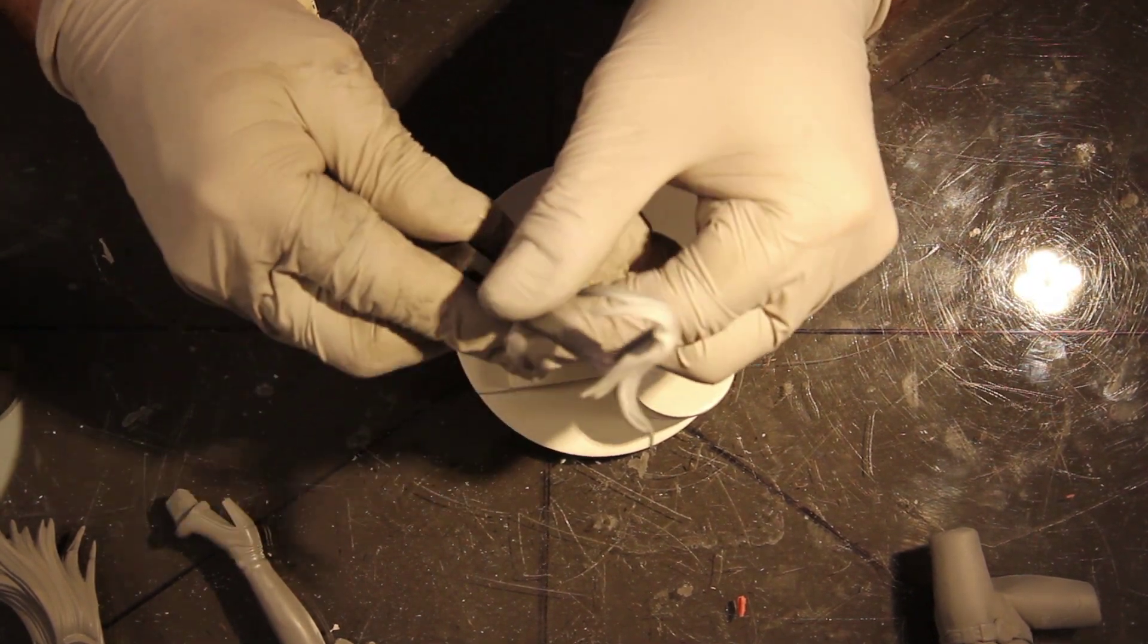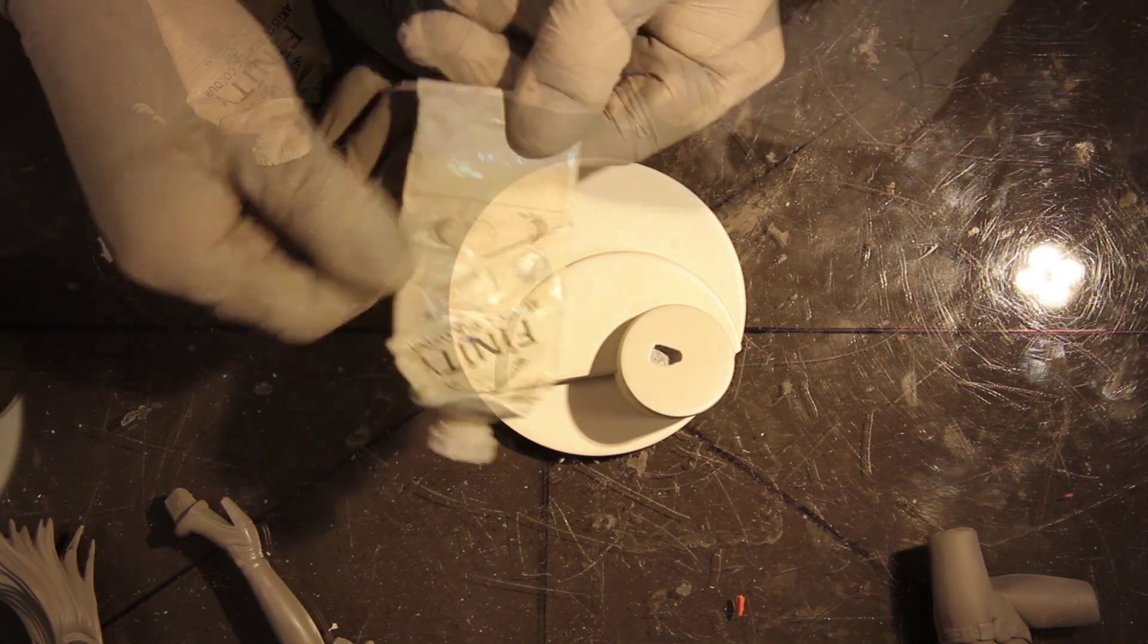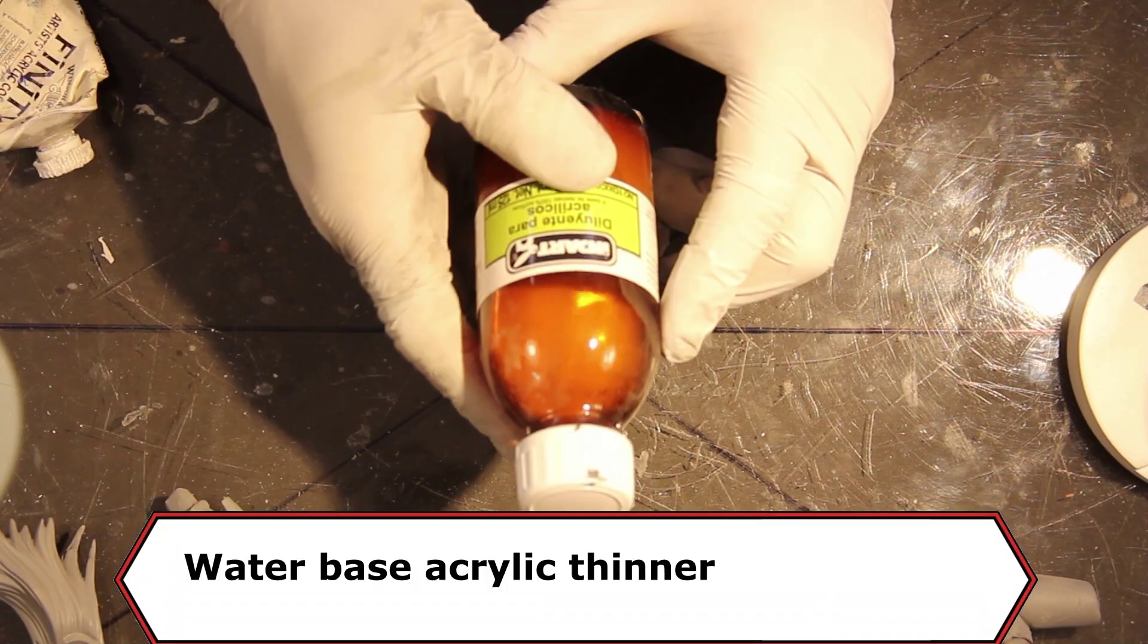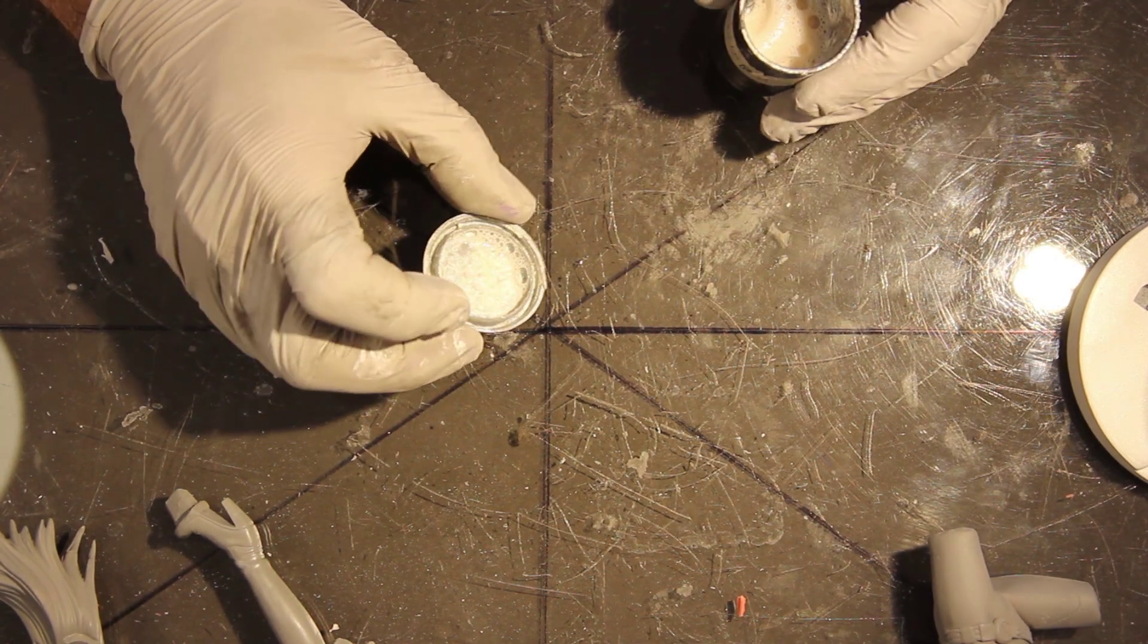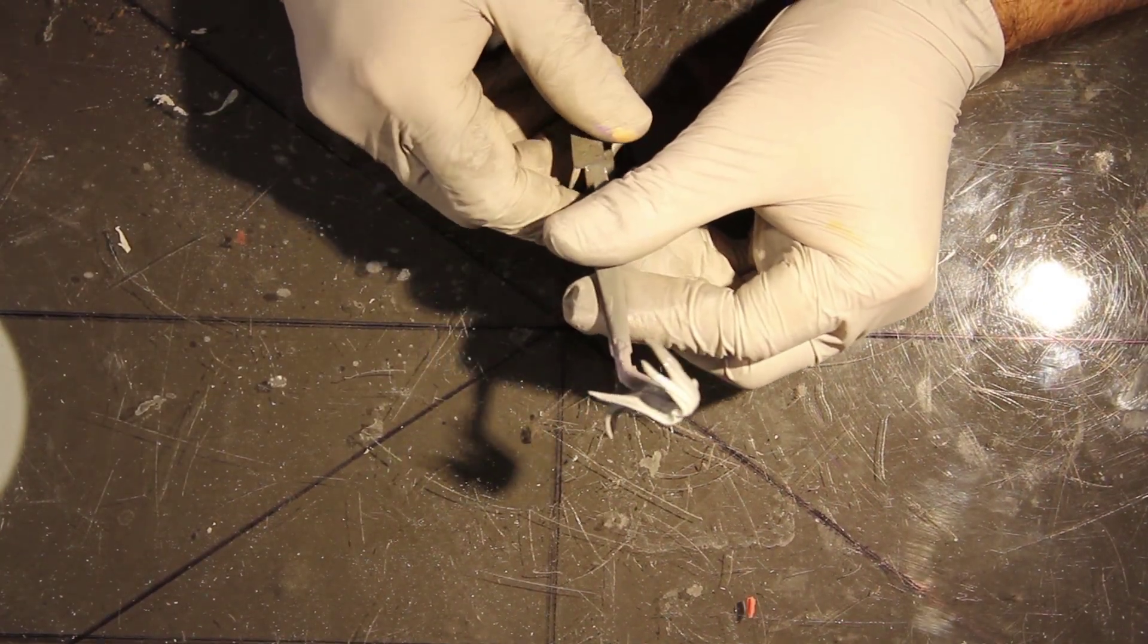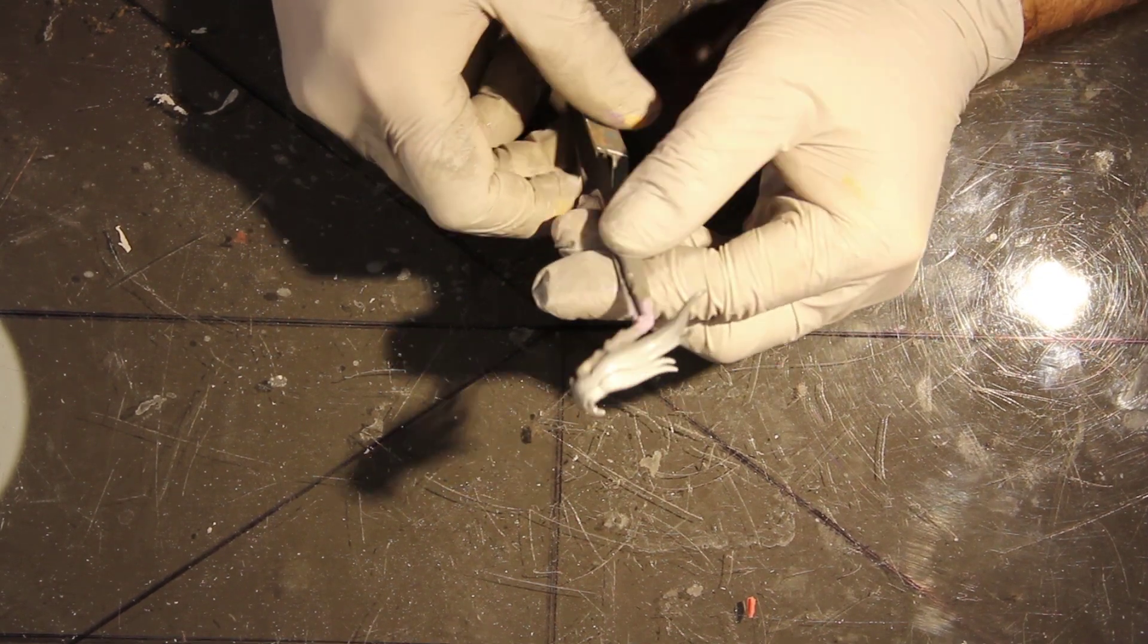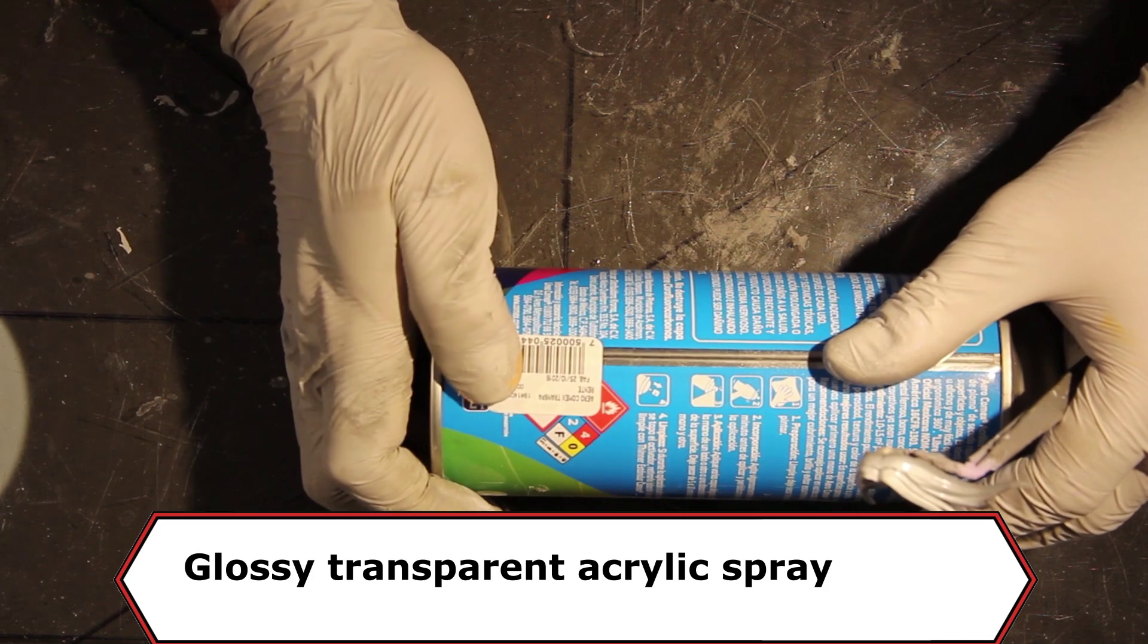After that I added an iridescent or interference white acrylic. This is a water-based paint that came from a tube which I mix with its own thinner to make it flow through the airbrush. And last I cover both the hair and base with a gloss transparent coat to protect them and have a very shiny look.